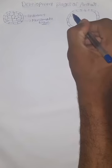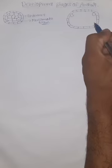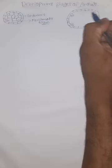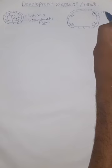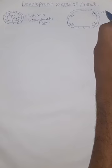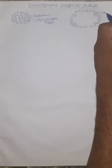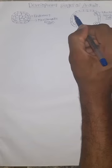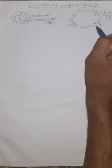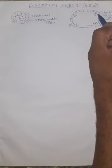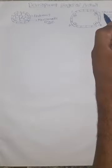From this meristematic tissue, one cell will be de-differentiated into a specialized cell called the archesporeal cell, which has a prominent nucleus and dense cytoplasm. This is the initial cell for all sporangium and anther wall formation. In each of the four corners, we can see one archesporeal cell. Only one cell can get differentiation from this tissue — that is the archesporeal cell.